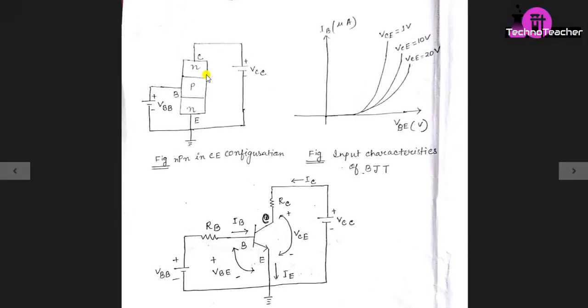Hello everyone, welcome to my channel. Today I will discuss the simulation process of input characteristics of BJT in common emitter configuration. I'll do the simulation using PSPICE and the download link of PSPICE is given in the description box.